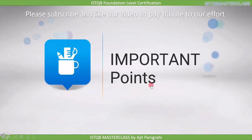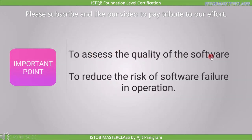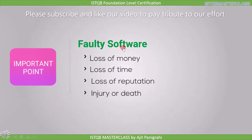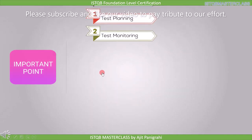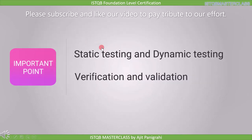Before we end this lecture, let's review the important points. Testing is done to assess the quality of the software and to reduce the risk of software failure in operation. Faulty software can result in loss of money, time, reputation, and injury or death. Testing is a process consisting of seven activities: test planning, test monitoring, test analysis, test design, test implementation, test execution, and test completion. Finally, testing consists of static and dynamic testing, and involves both verification and validation processes. All these important points are available as a resource attached to this video.